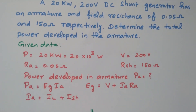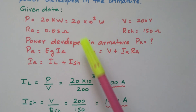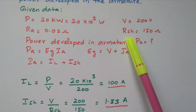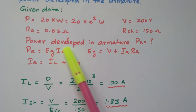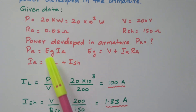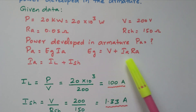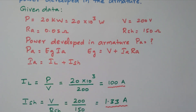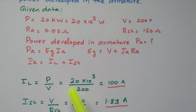Now we will see the data one by one. The power is given as 20 kW (20 × 10³ watts), the voltage is 200 V, armature resistance is 0.05 ohm, and shunt field resistance is 150 ohm. We need to find the power developed inside the armature, PA equals EG × IA. To find EG, we use EG equals V plus IA × RA, and to find IA we use IA equals IL plus ISH.